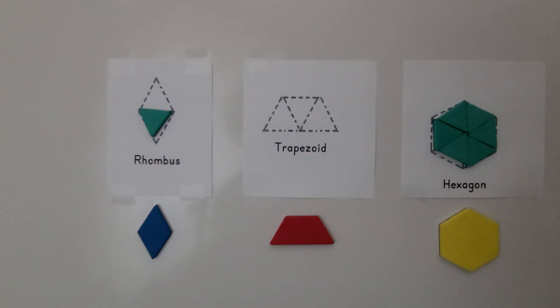So we can join smaller shapes, like the little green triangles, together to make larger shapes.